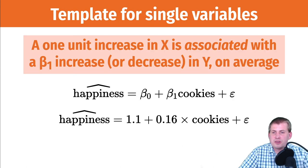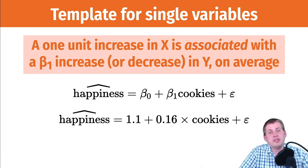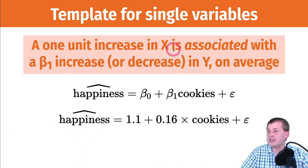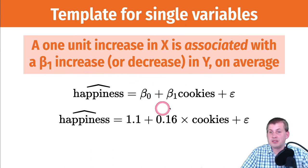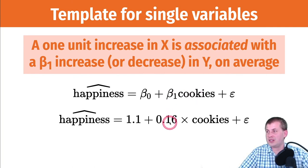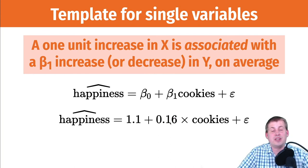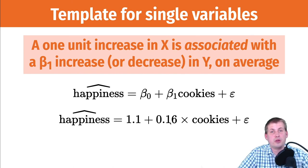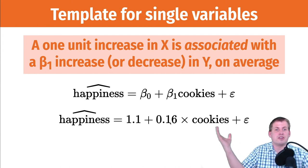For a single variable, here's the interpretation template: 'A one unit increase in x is associated with a beta-1 increase in y, on average.' In this case: a one unit increase in cookies is associated with a 0.16 unit increase in happiness on average. It's a stilted way of talking about it, but that's the template to use.